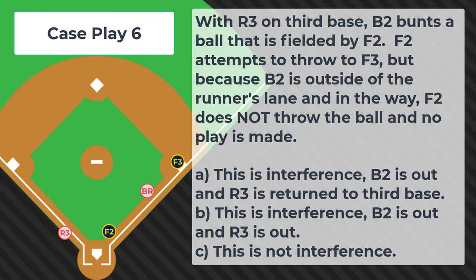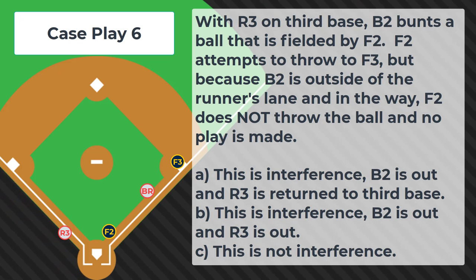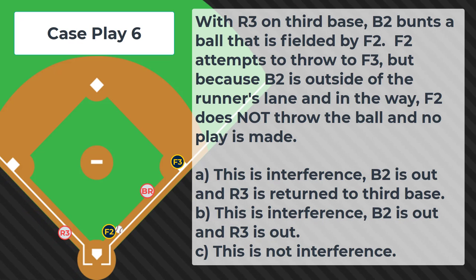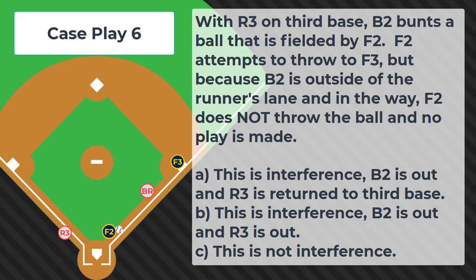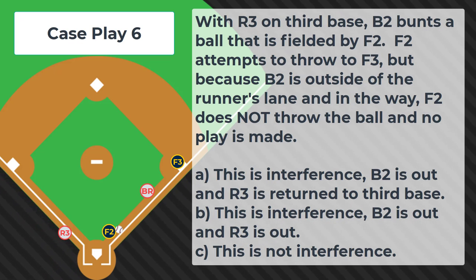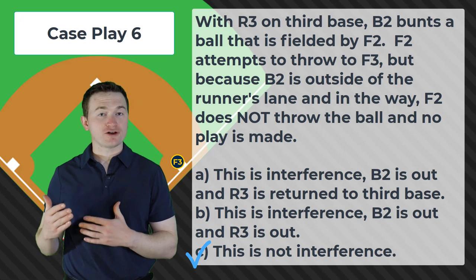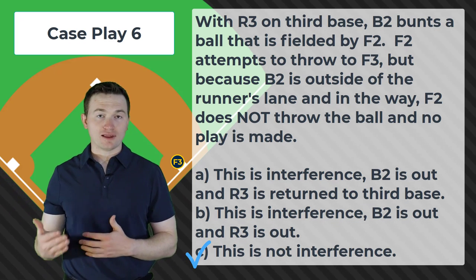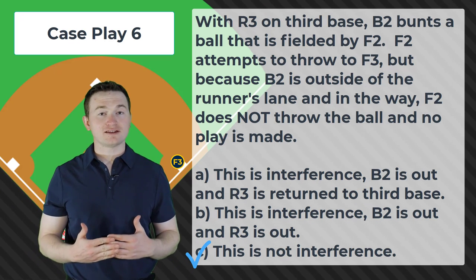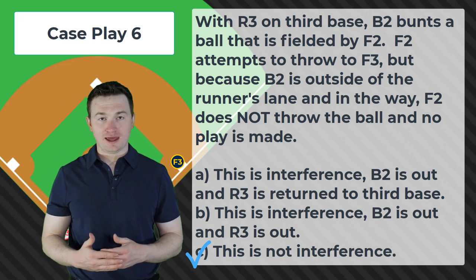Case play number six. With R3 on third base, B2 bunts a ball that is fielded by F2. F2 attempts to throw to F3, but because B2 is outside of the runner's lane and in the way, F2 does not throw the ball and no play is made. Is this A — interference, B2 is out and R3 is returned to third; B — interference, B2 is out and R3 is out; or C — this is not interference? The correct answer is C, this is not interference. Because the ball is never thrown to first base, we can't have a runner's lane violation. The runner's lane rule specifically says the ball must be being fielded or thrown to first base. Without a throw, there's no violation and this play will stand.